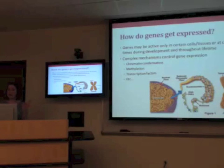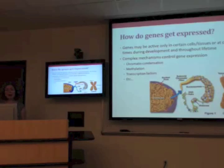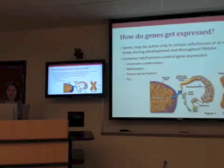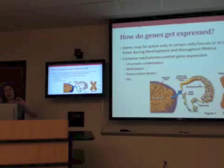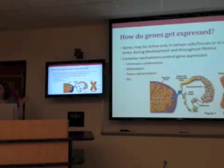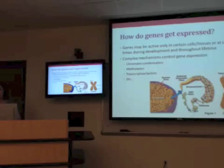There are complex mechanisms that control gene expression relevant to FSH, including chromatin condensation. Our chromosomes contain DNA that is very tightly coiled — these strands are called chromatin — and in order for a gene to be expressed, that chromatin has to unwind so the DNA can be open and exposed, then the machinery can turn it into RNA and protein. Another control mechanism is methylation, a chemical modification where a methylated gene can't be expressed but an unmethylated gene can. And transcription factors, like DUX4, also signal which genes turn on and off.